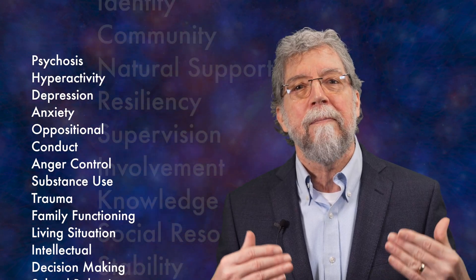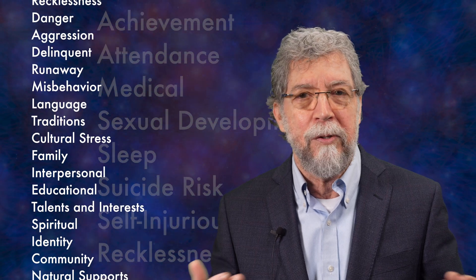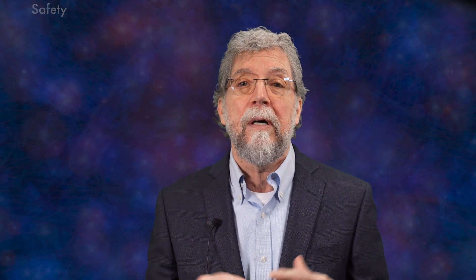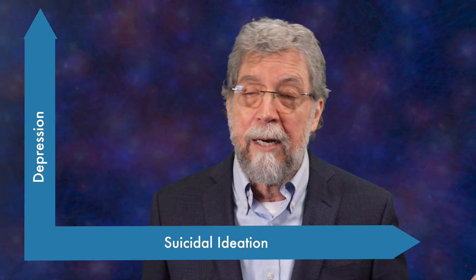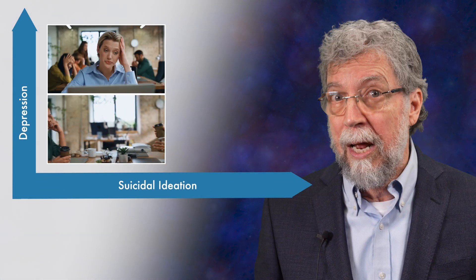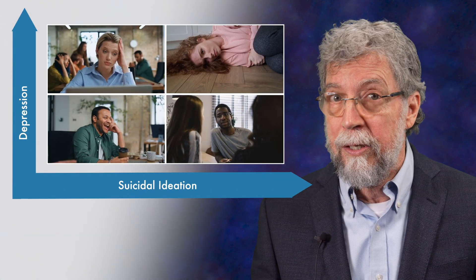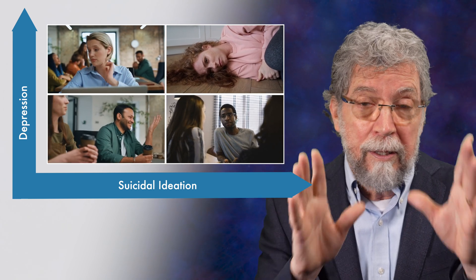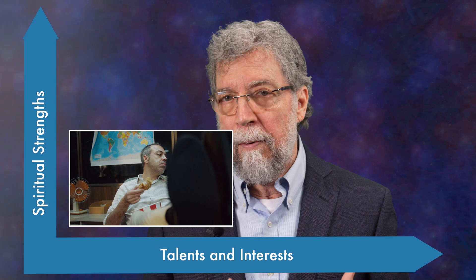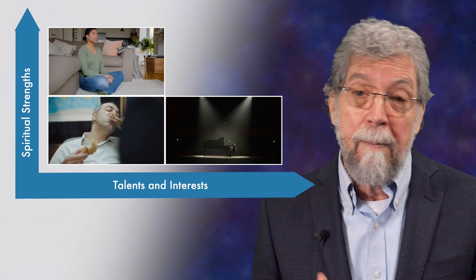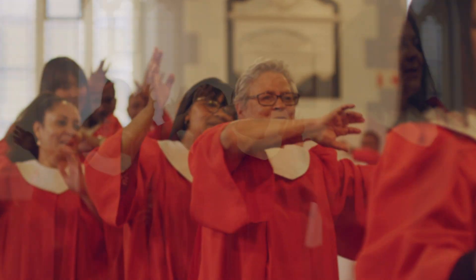Consider the following. Communometric measures have at least 50 different items or indicators. You can picture understanding somebody in two dimensions — let's say those two dimensions are suicide and depression. Some people are not depressed and not suicidal. Some people might be depressed and not suicidal. Some people might be depressed and acutely suicidal. We understand their location relative to each other in this two-dimensional space. Or, using a strength example, let's pick talents and interests and spiritual strengths — some people might have neither, some one or the other, some might have both. Let's say they sing in a church choir.